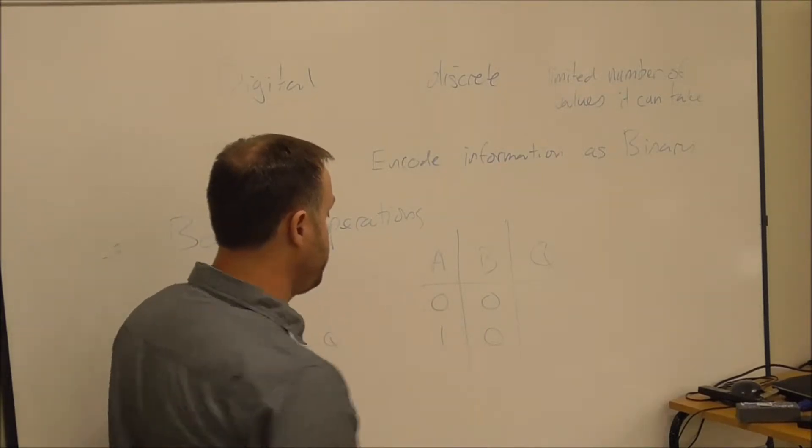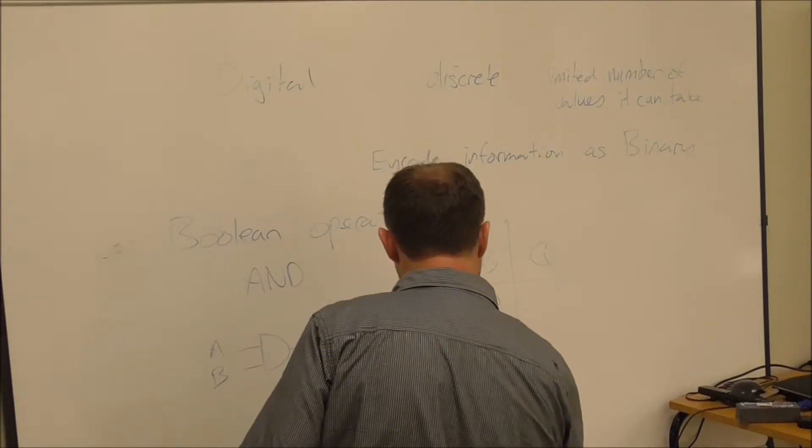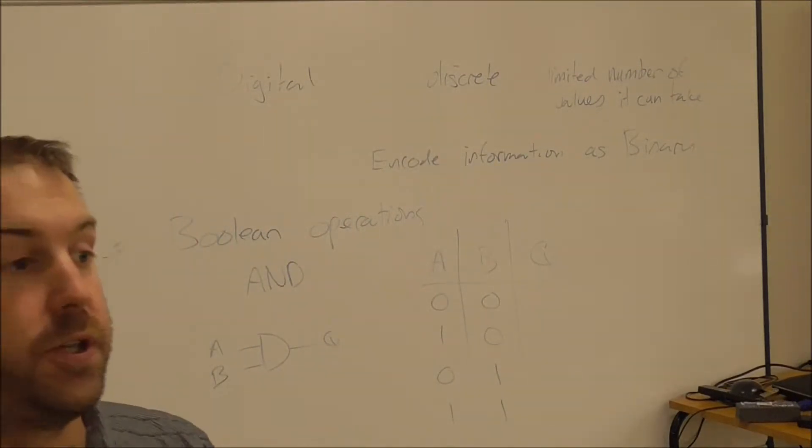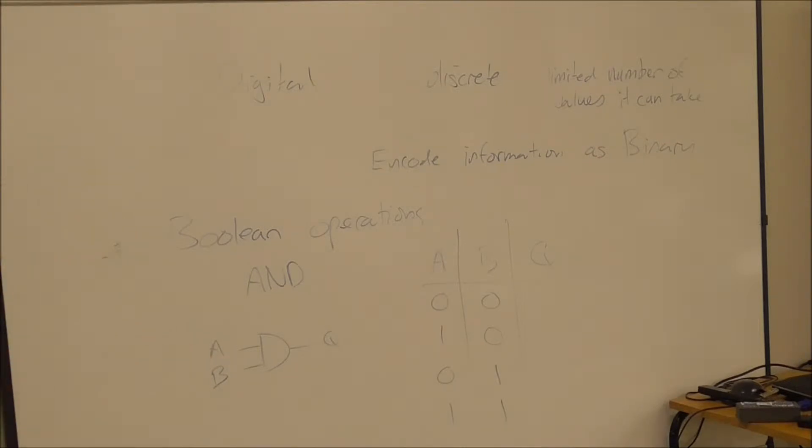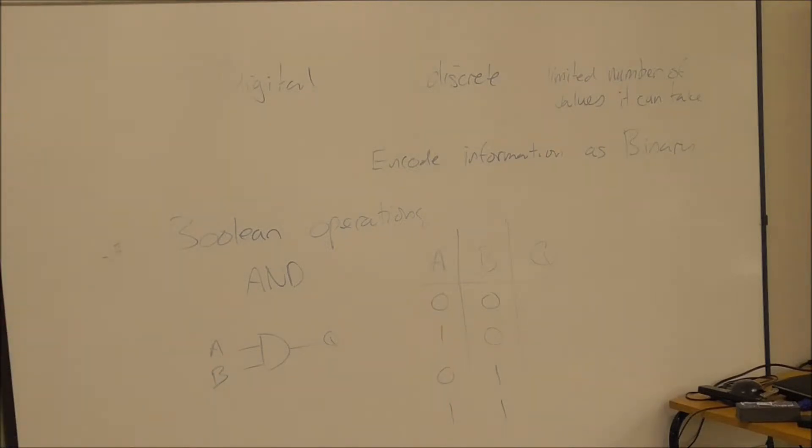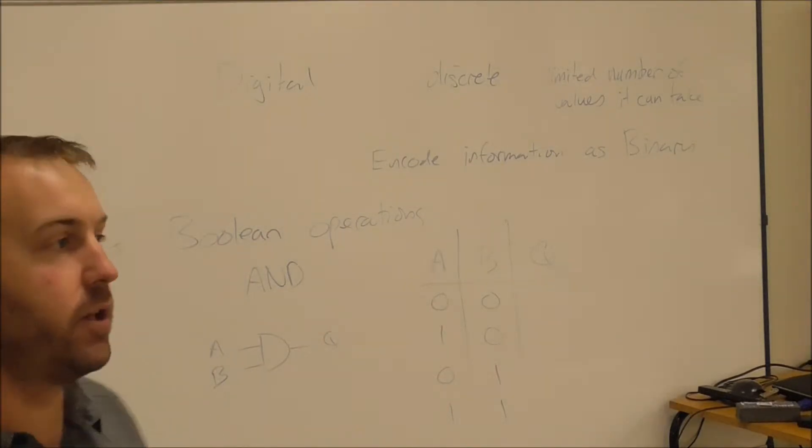But now what if B is one, I have the same zero and one for the other two. So I've got a total of four different combinations that my inputs can be. Four different input states. It's got to be one of those four. It can't be anything other than that.